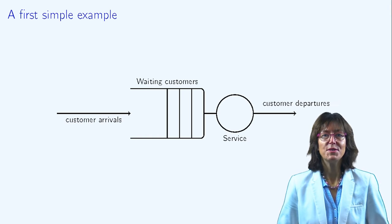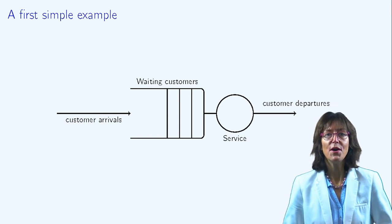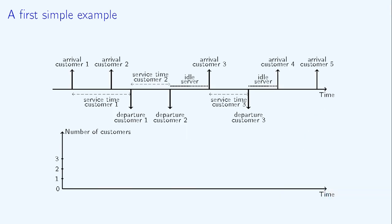Again, let's consider our simple example with one server and an infinite buffer. Arrivals are represented by up-arrows and departures by down-arrows.